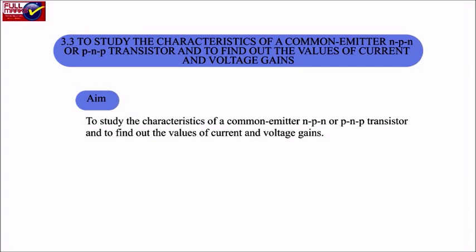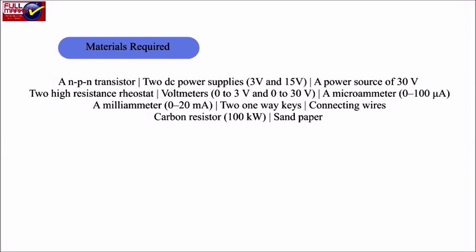Experiment 3.3: To study the characteristics of a common emitter NPN transistor and to find out the value of current and voltage gain. Materials required: An NPN transistor, 2 DC power supplies (3V and 15V), a power source of 30V, 2 high resistance rheostats, voltmeters (0–3V and 0–30V), a microammeter (0–100μA), a milliammeter (0–20mA), 2 one-way keys, connecting wires, a carbon resistor of 100kΩ, and sandpaper.